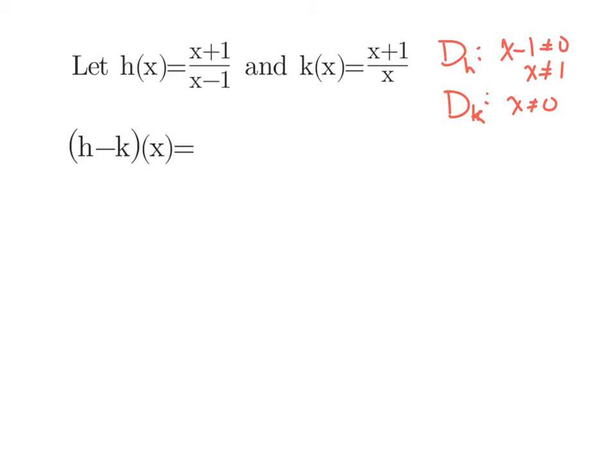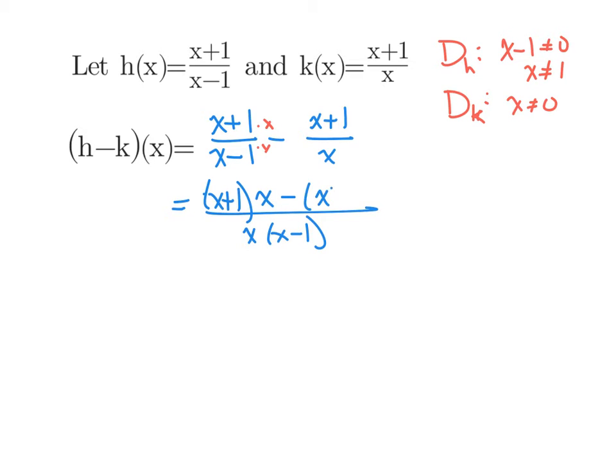So now to find the difference of these two, I'm just going to take h(x) and subtract k(x), the (x+1)/x. Got two fractions I'm trying to subtract, so I'm going to need a common denominator. The two factors in my denominator are going to be x and x-1, which means this x+1 from the first fraction still needs to get multiplied by x/x. And this x+1 from the second fraction needs to get multiplied by (x-1)/(x-1).